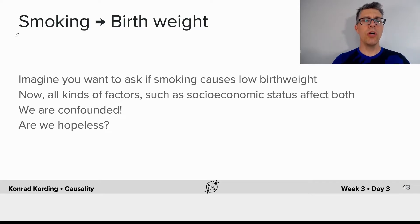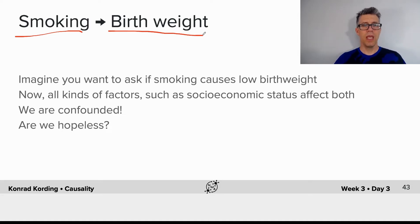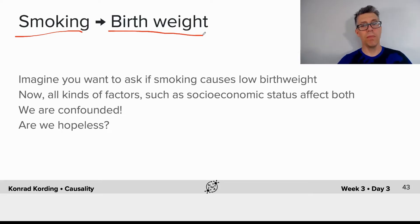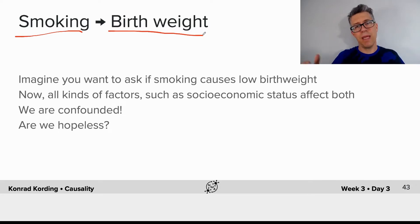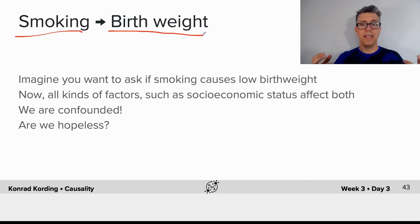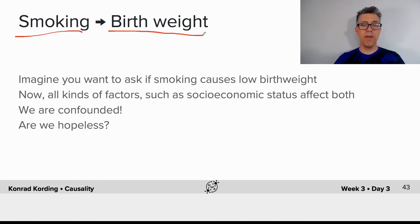Let's say we want to know how smoking affects the birth rate of new babies. Imagine you want to ask if smoking causes low birth weight. All kinds of factors can be relevant — for example, socioeconomic status. It could be that poor people smoke more, and poor people for some other reason have babies of low birth weight, in which case there's an association between those two that has no causal meaning. We have confounding.